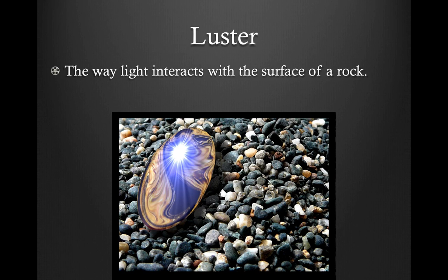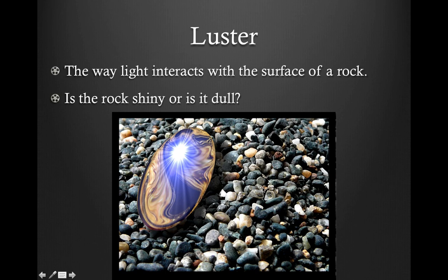The last property is luster — the way light interacts with the surface of a rock. In other words, is the rock shiny or dull? Rocks that reflect light strongly are said to have high luster, while dull rocks have little or no luster. Geologists use a light source to demonstrate this difference. Simply put, luster tells you whether a rock is shiny or dull.